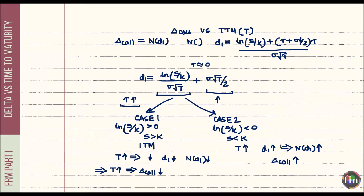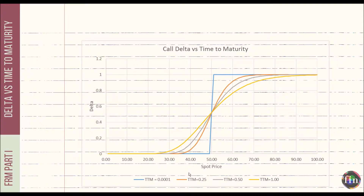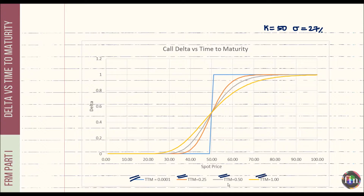Now let's put this to action and plot the actual deltas for various time to maturities and moneyness levels. I've picked a call option with a strike of $50 and volatility of 27%, and plotted deltas for four different maturities: one very close to expiry (0.0001), three months, six months, and one year.